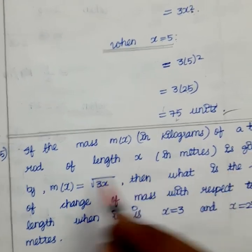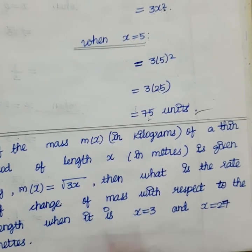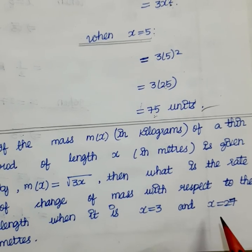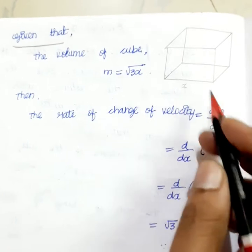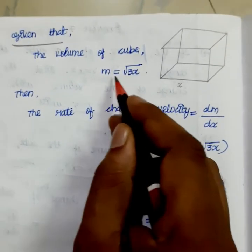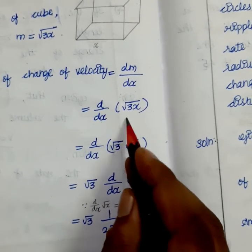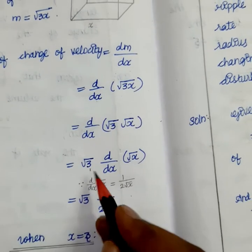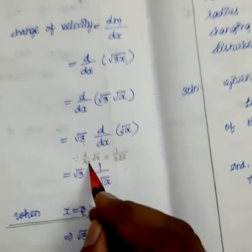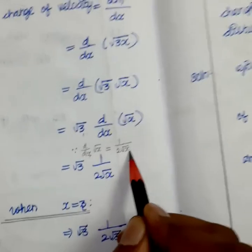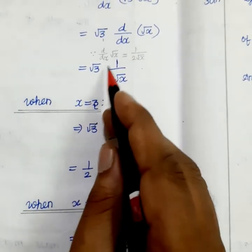Fifth problem: the mass m(x) in grams of a thin rod of length x in meters is given by m(x) = √(3x). Find the rate of change of mass with respect to length at x = 3 and x = 27. Differentiating: dm/dx = d/dx[√3 · √x] = √3 · d/dx[√x] = √3 · (1/(2√x)). Substitute x = 3 and x = 27 to find respective rates.